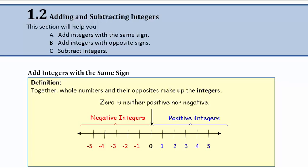Let's take a look at a definition here first. Together, whole numbers and their opposites make up the integers. So if we're looking at our list of integers here, the whole numbers start at zero and then add the counting numbers to it: one, two, three, four, five, and go on forever to the right.